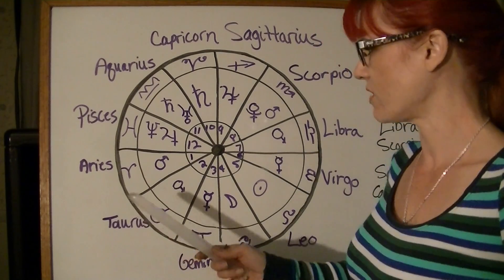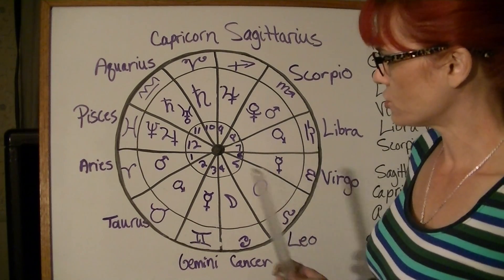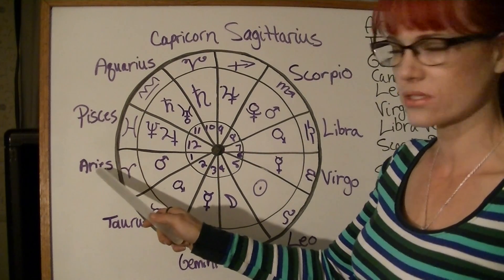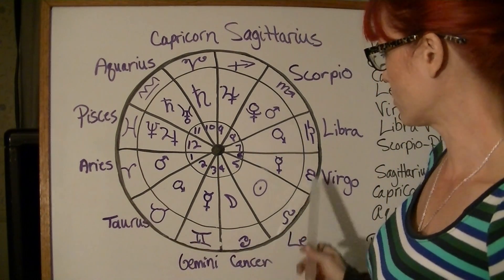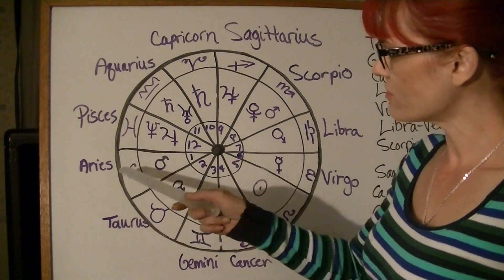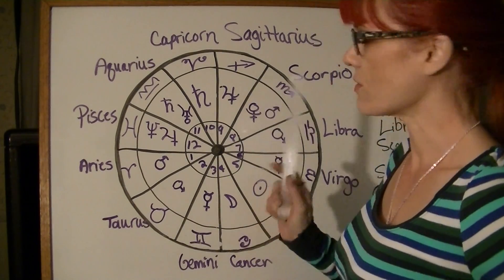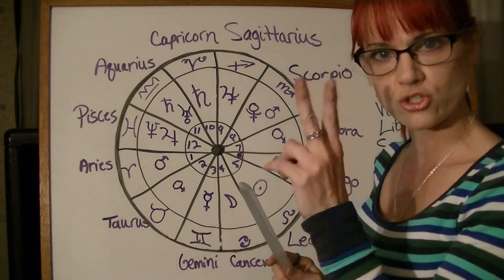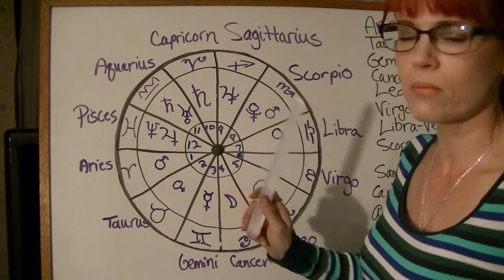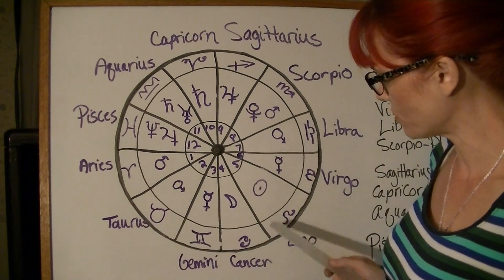We have an Aries rising birth chart here, so that means Aries is on the first house, and as we go through we end up with Pisces on the 12th house. Every planet rules a sign, and there are three signs that are ruled by two planets. Aries is ruled by Mars, Taurus by Venus, Gemini by Mercury, Cancer by the Moon.